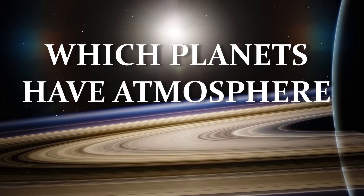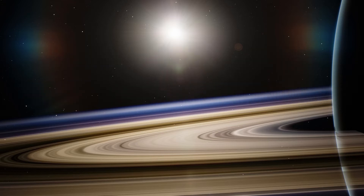Which planets have an atmosphere and why? Some planets in our solar system, like Earth, have a nice atmosphere. Some planets don't have any atmosphere, or they have a very sparse atmosphere with particular gases. Other planets, like Jupiter, have a very thick, rich atmosphere.